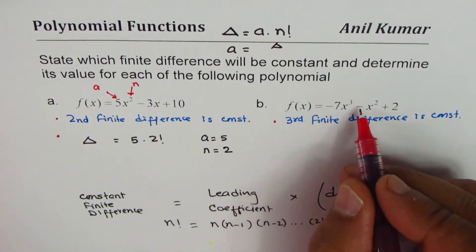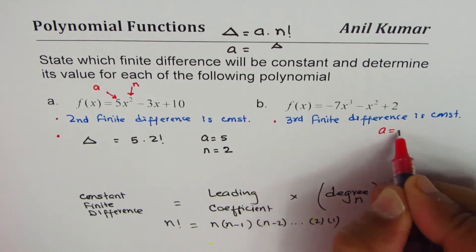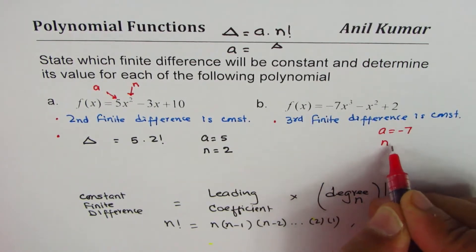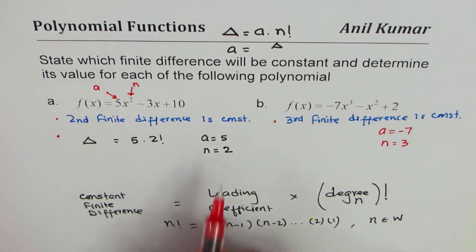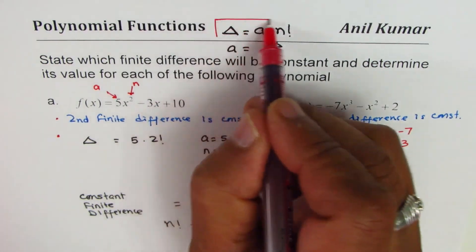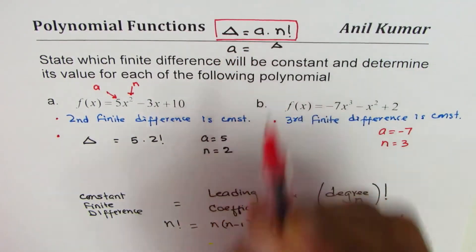Here, what is leading coefficient? a is minus 7 and degree is 3. Now we'll use the formula, which is this one, to get the result.